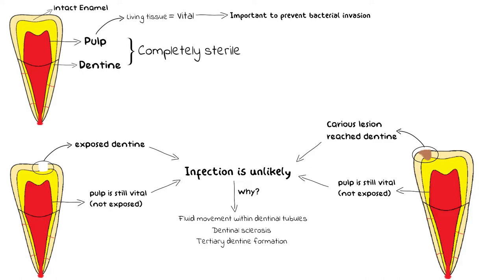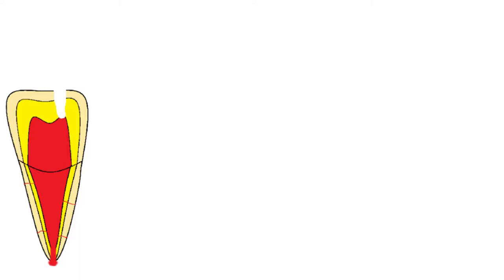Vitality and inflammation of the pulp depends on the remaining dentinal thickness, commonly known as the RDT, which is a very important factor in protecting the pulp. The pulp has many ways to defend itself. But even after all this, there are certain ways which can cause a breach all the way through the dentine and bacteria can gain access to the vital pulp.